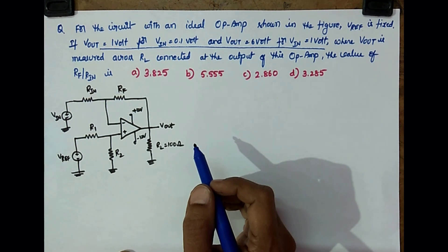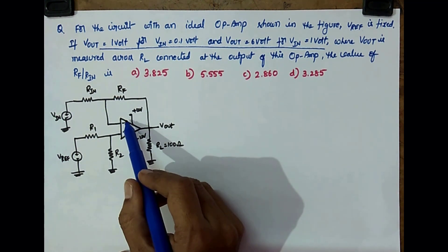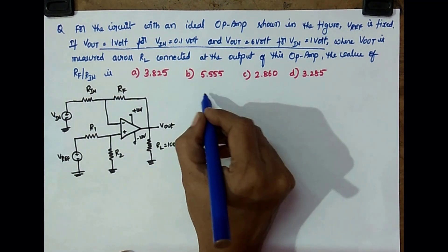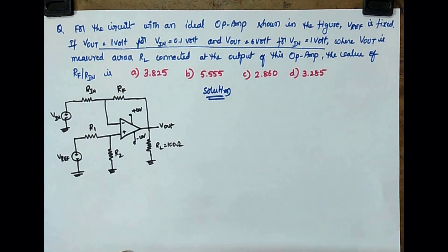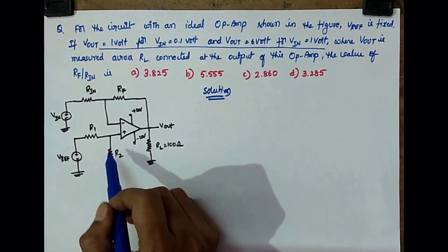So now how to find? Here also you have to use the same ideal op-amp concept and the voltage at non-inverting and inverting terminals is same when the op-amp is ideal. Then, I will see the solution. So now, see the op-amp is ideal.